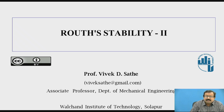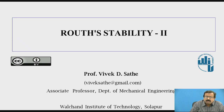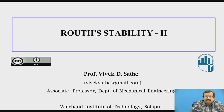The preparation of Routh's table was covered in the last lecture: write the equation in descending order, then prepare a vertical column of variable powers from highest to lowest order — that is, S^n down to S^0 (the constant term). Then write the odd-numbered terms and even-numbered terms separately.